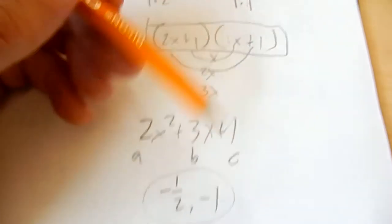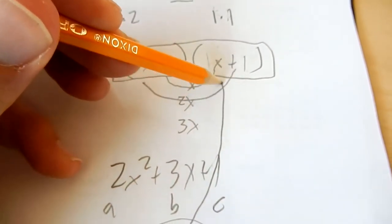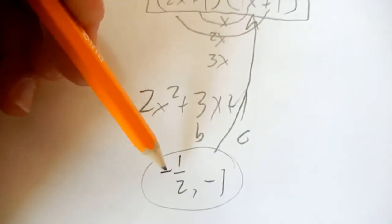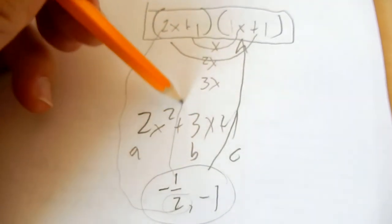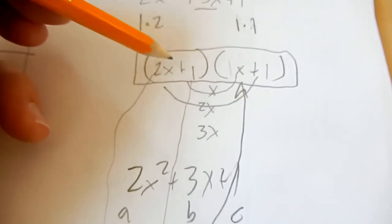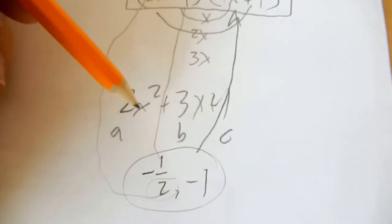You can kind of build it backwards from that because notice the negative 1 is the answer to this x plus 1. And the negative 1 half, there's the 2, there's the 1, is the answer to that. And by the answer, I mean when it's equal to 0. So those are the roots.